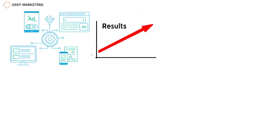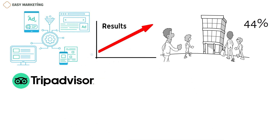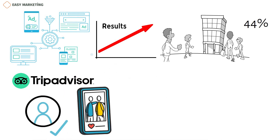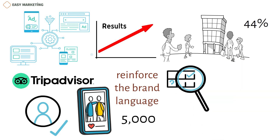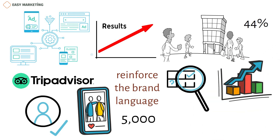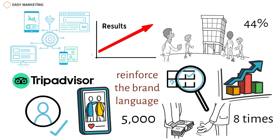For example, a hospitality company in London used display advertising to boost sales by 44%. Using TripAdvisor's display advertising management platform, the company made sure their ads reached the right people. Using lifestyle photos and photos of the rooms was a smart way to reinforce the brand language and break through the 5,000 or more ads that people see every day. As a result, the brand improved its digital ad management for better upselling and cross-selling, with returns eight times the initial display ad costs.